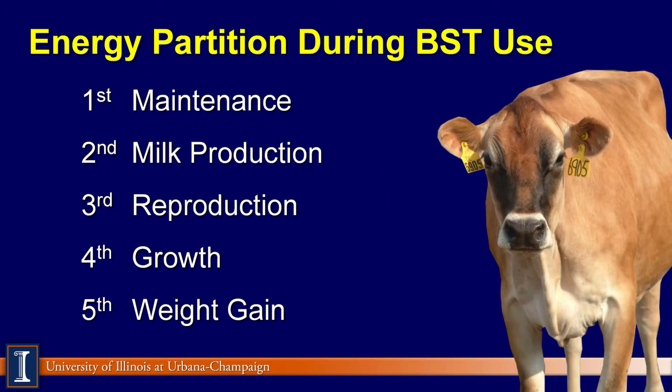Many of us know there is another energy partitioning agent called bovine somatotropin, or BST. BST will actually change the rules a little bit and encourage or drive the cow to produce more milk. Therefore, if you do not have enough energy in the ration, one of the lower-priority partitions has to give it up. A key concern with BST is having adequate nutrients to meet the extra 6, 8, or 10 pounds of milk the cow will produce.